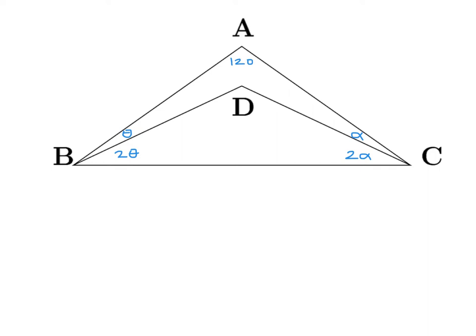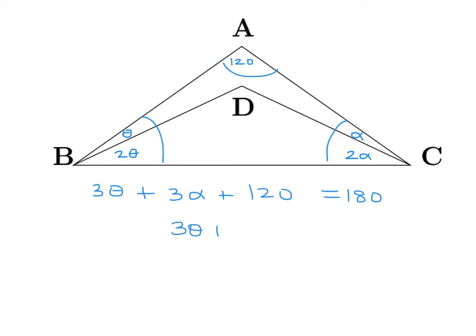We know that all the angles of a triangle always add up to 180, so let's add them all up. That's 3 theta, these two give 3 alpha, and this angle up here is 120. So that means 3 theta plus 3 alpha equals 60, and dividing by 3, you get alpha plus theta equals 20.